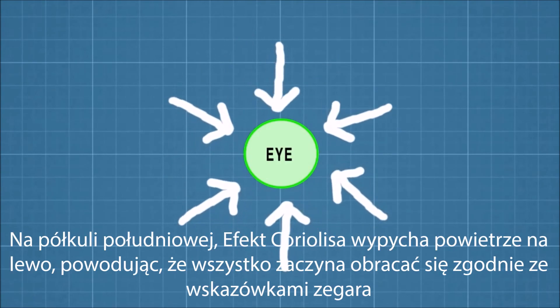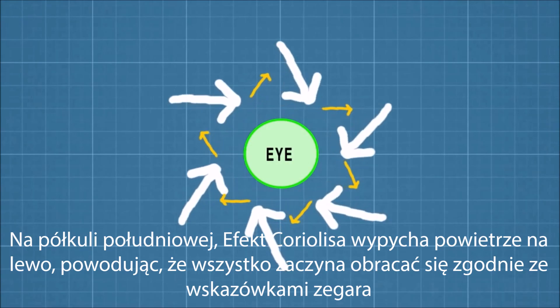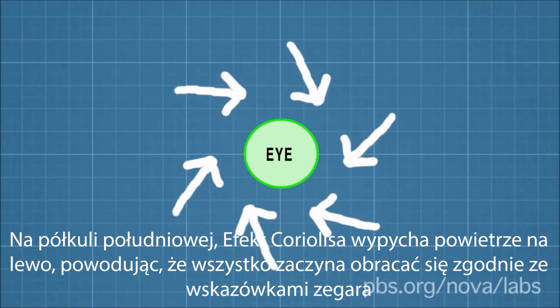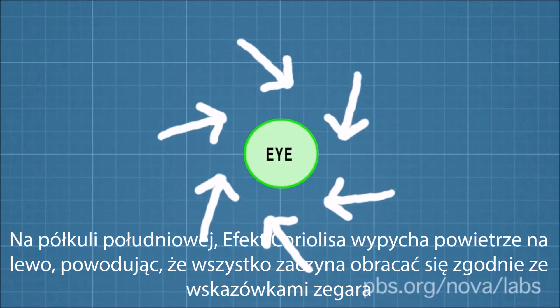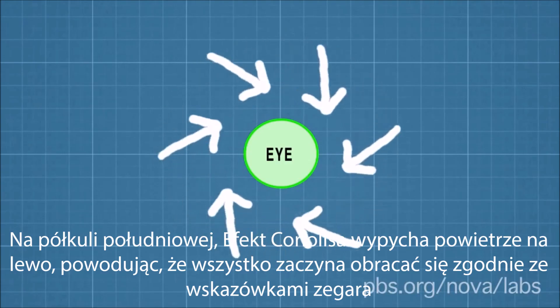In the southern hemisphere, where the Coriolis effect pulls air to the left, the opposite happens. Storms spin around the eye in a clockwise manner.